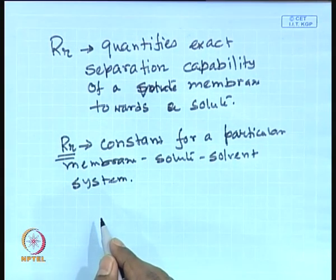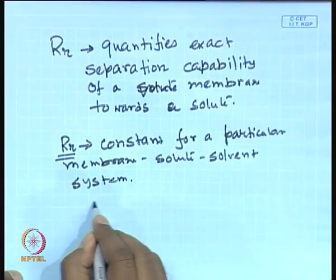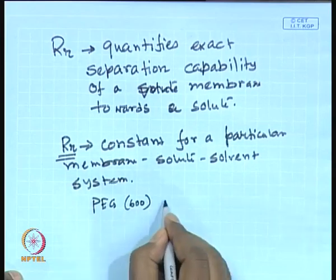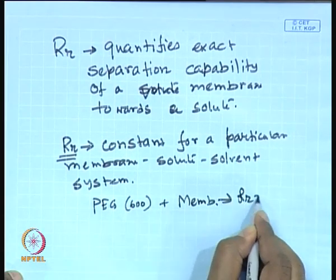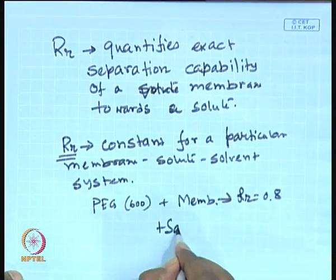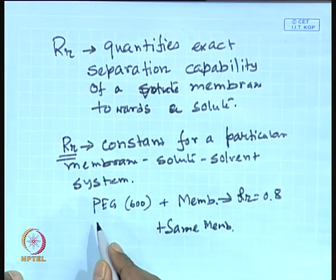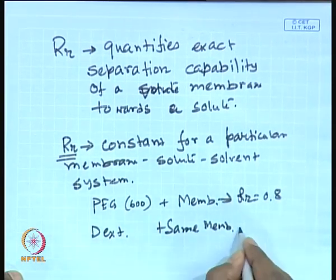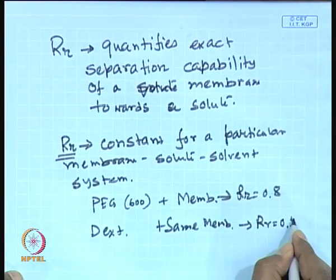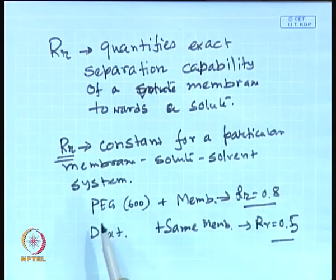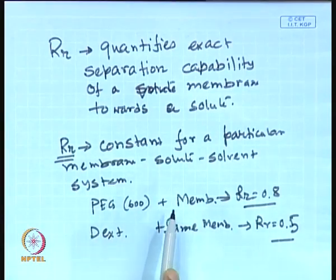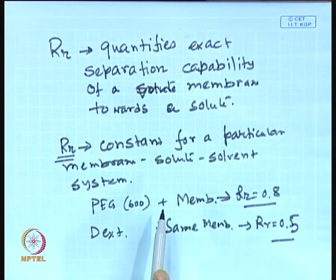Real retention is constant for a particular membrane-solute-solvent system. For example, if you have an aqueous solution of polyethylene glycol 600 and some membrane, the real retention can be 0.8, but using the same membrane with a different solute like dextran, the real retention can be 0.5. This value of real retention is fixed for a particular membrane-solute system. For different solute and membrane combinations, the real retention becomes constant — it is an intrinsic property of the membrane towards a particular solute.